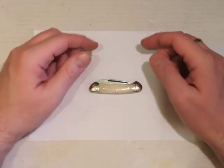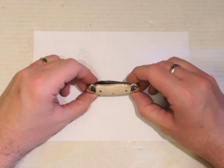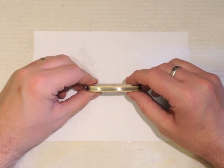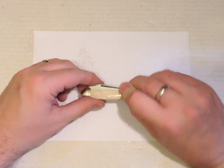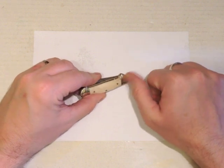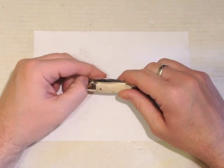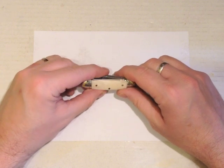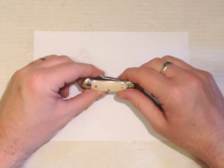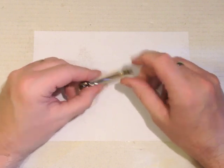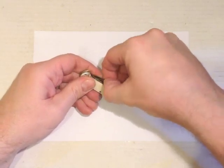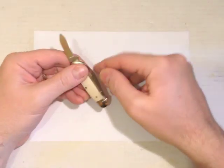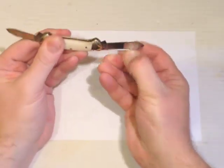We've got standard traditional pattern construction on this canoe: two back springs, two brass liners, nickel silver bolsters with an engraved or cut line detail, white bone scales, three brass pins, and two blades - small pen blade and a larger blade.